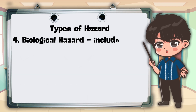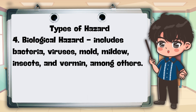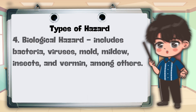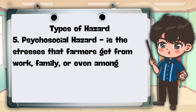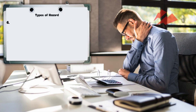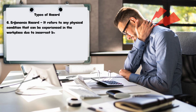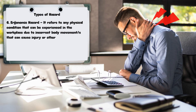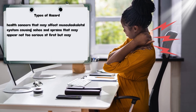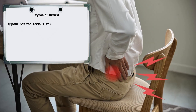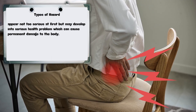4. Biological hazard — It includes bacteria, viruses, mold, mildew, insects, and vermin, among others. 5. Psychosocial hazard — It is the stress that farmers get from work, family, or even among friends. 6. Ergonomic hazard — It refers to any physical condition experienced in the workplace due to incorrect body movements that can cause injury or health concerns affecting the musculoskeletal system, causing aches and sprains that may appear minor at first but may develop into serious health problems causing permanent damage to the body.